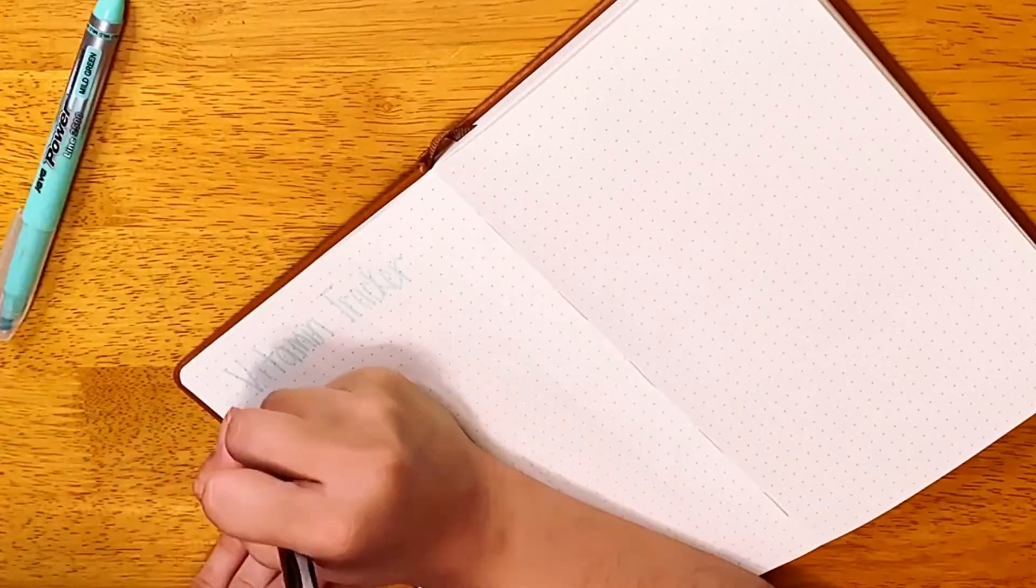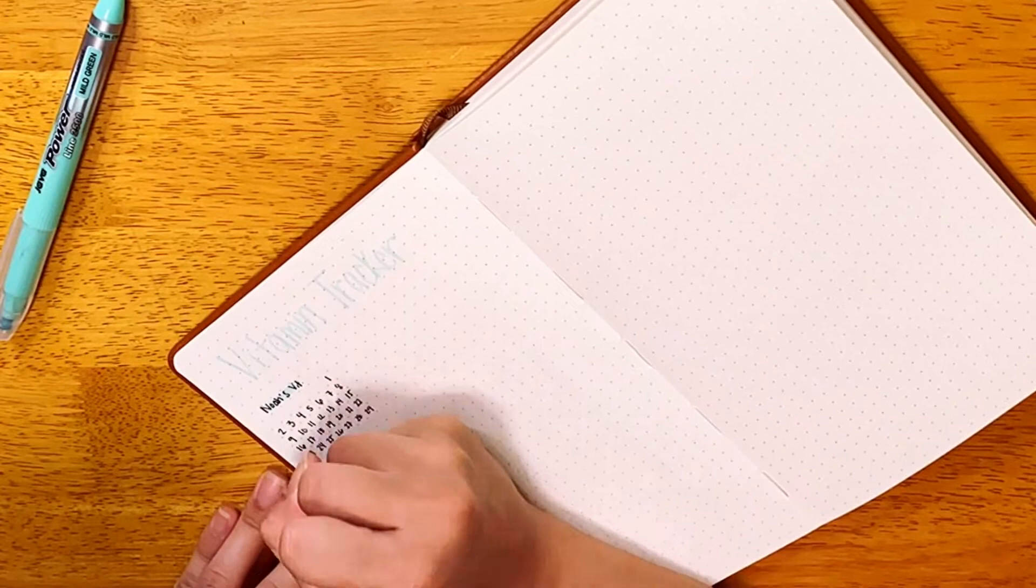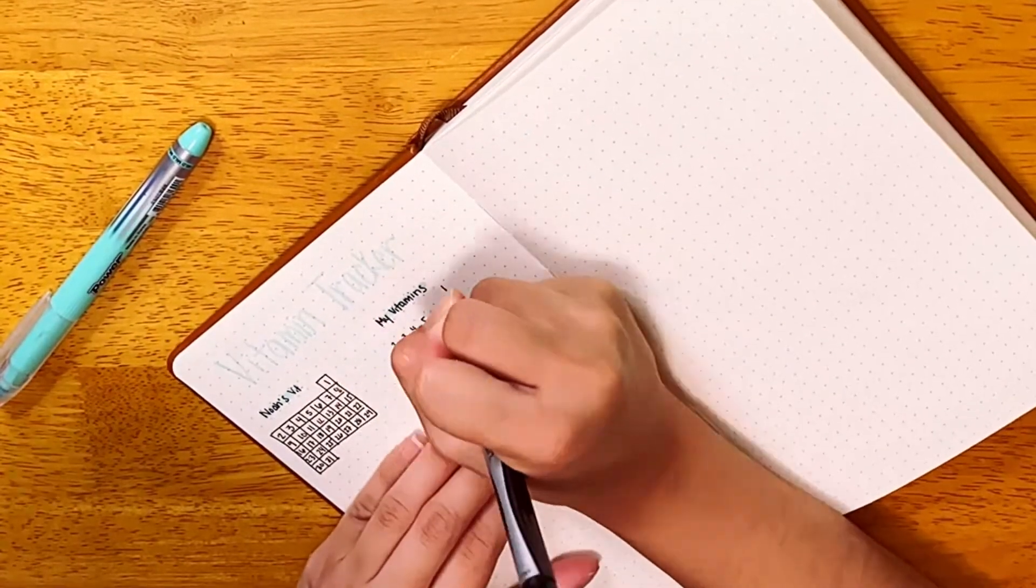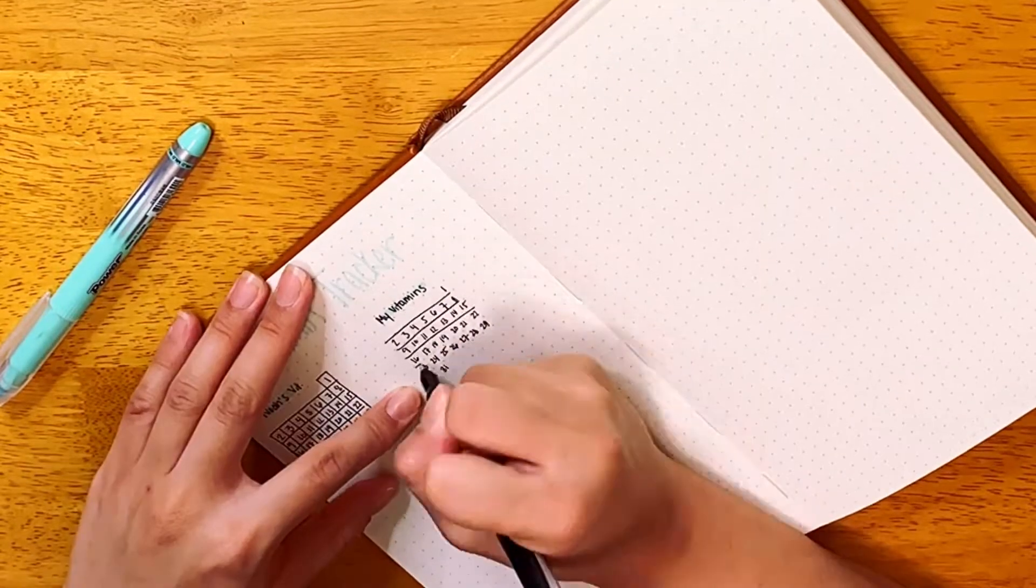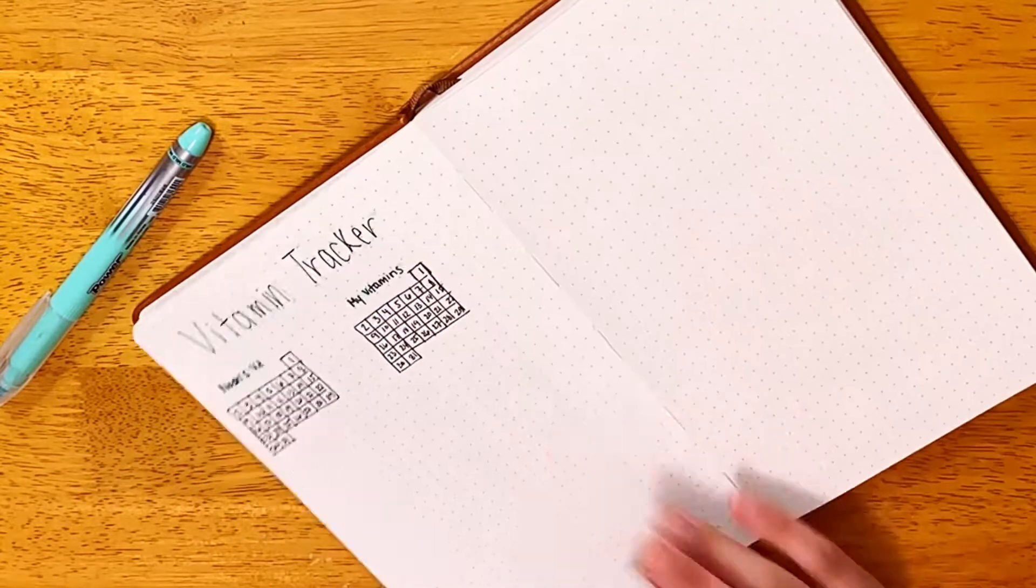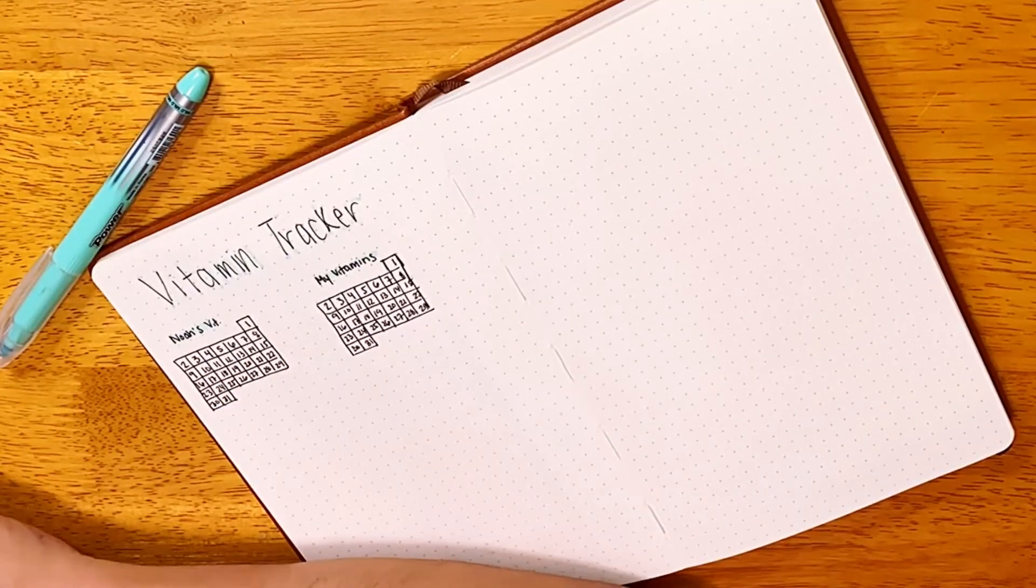I stopped recording for some reason, but after the fluid intake grid, I went ahead and added a daily cleaning task tracker. And I just forgot to record that. Now I'm just adding additional trackers. One for myself, I want vitamins and one for Noah. Because sometimes I forget. And then also I don't want to give him two vitamins in a day.